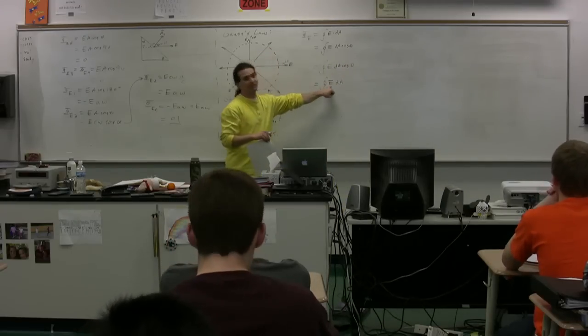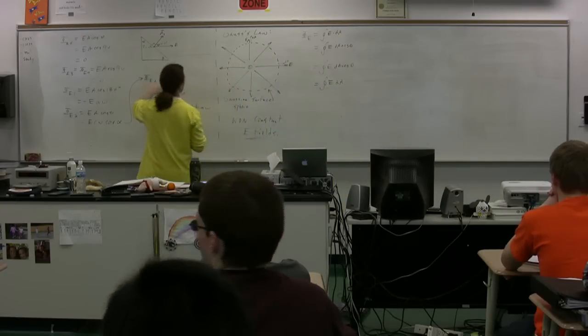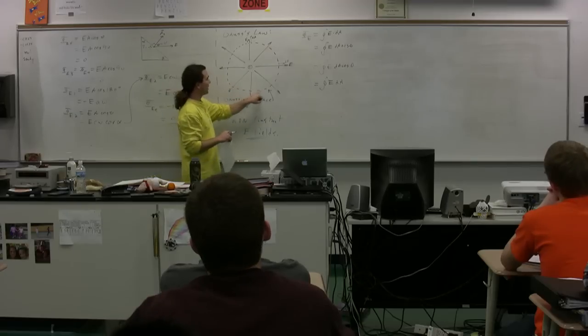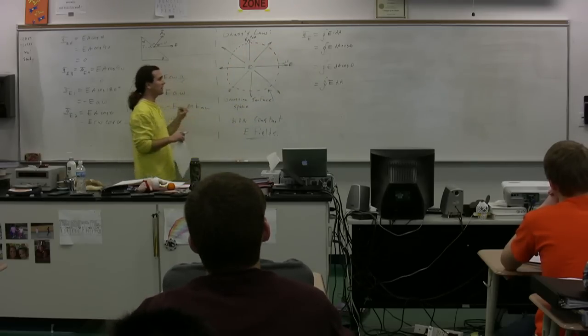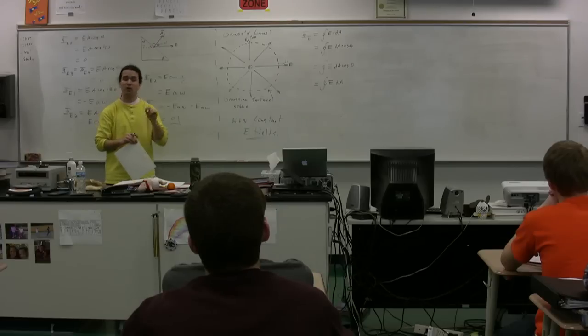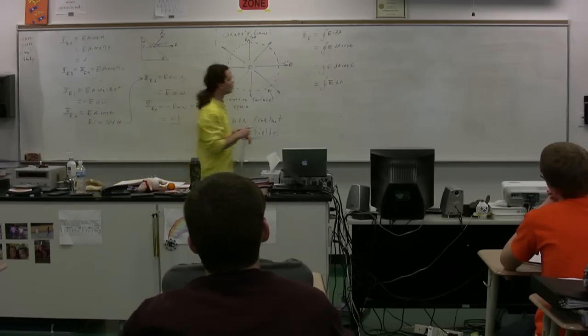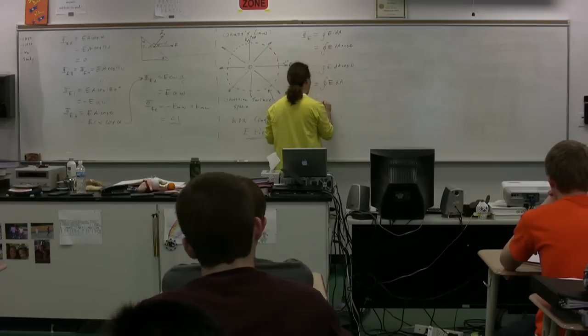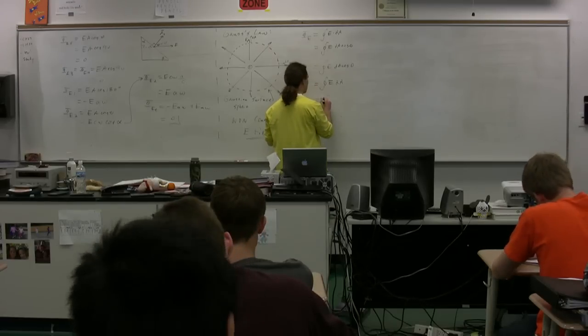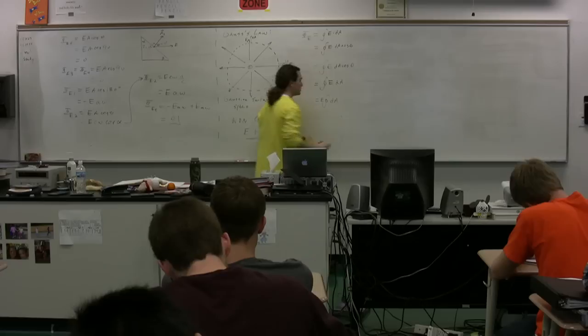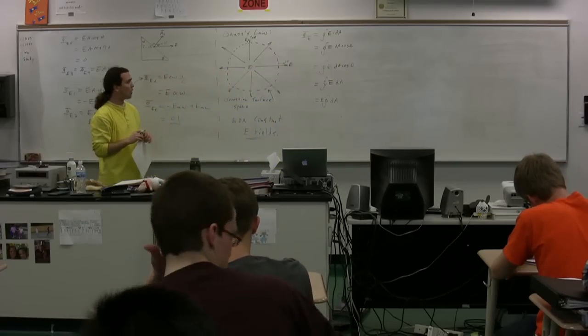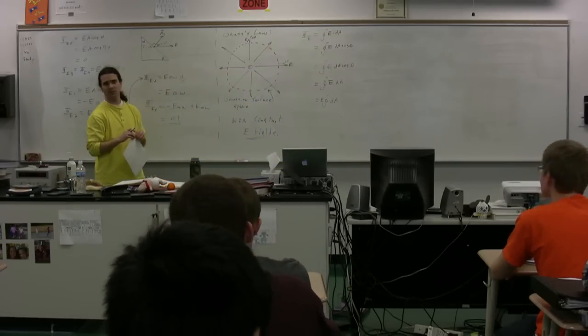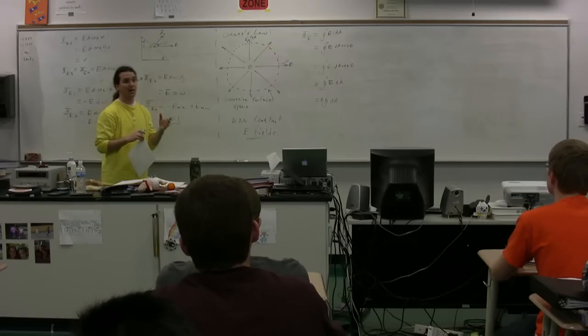The electric field. Notice that the electric field, because we picked a Gaussian surface which is a sphere, we know that that electric field is constant no matter which dA we pick. So, we can take the electric field out from the closed surface integral. So, it's E times the closed surface integral of dA. And class, what is the integral, the closed surface integral of dA? A.